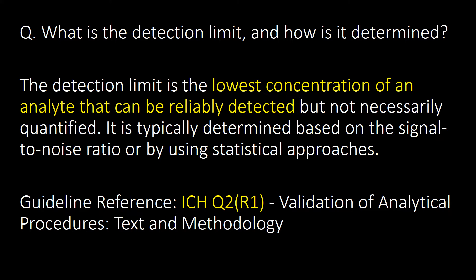What is the detection limit and how is it determined? The detection limit is the lowest concentration of an analyte that can be reliably detected but not necessarily quantified. It is typically determined based on the signal-to-noise ratio or by using statistical approaches. Guideline reference: ICH Q2.